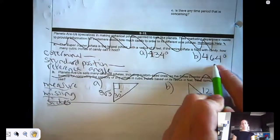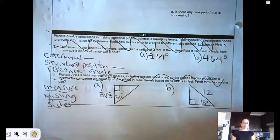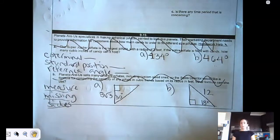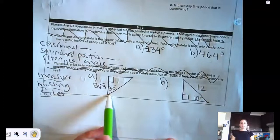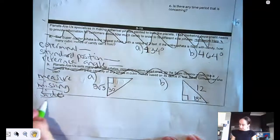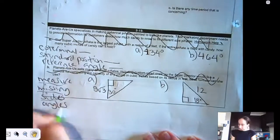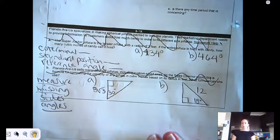I want you to find co-terminal, standard, and reference for 464. And then I crossed off that part, but I added I want the measure of the missing sides. And let's do angles as well. So copy that down and make sure you're good to go.